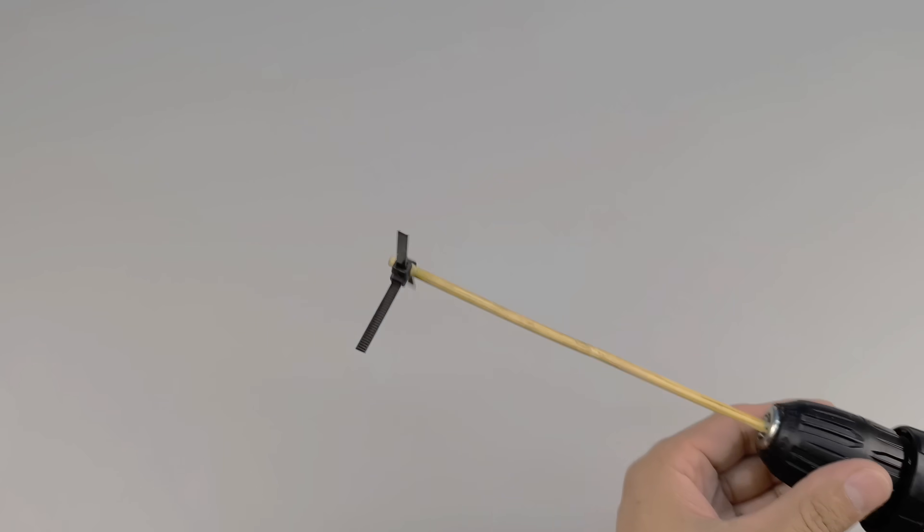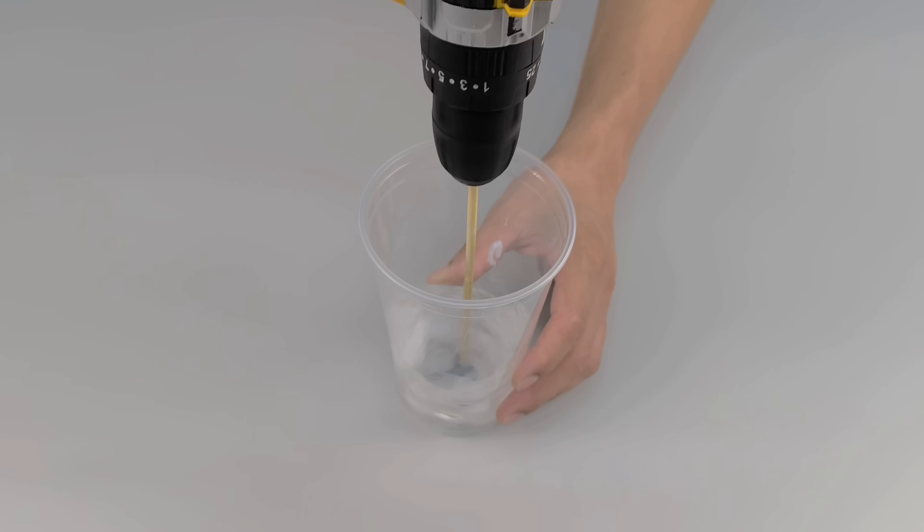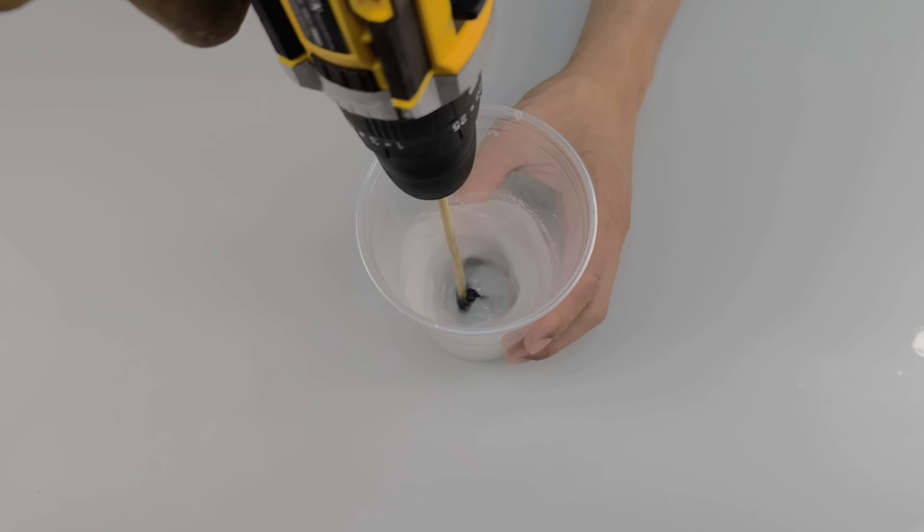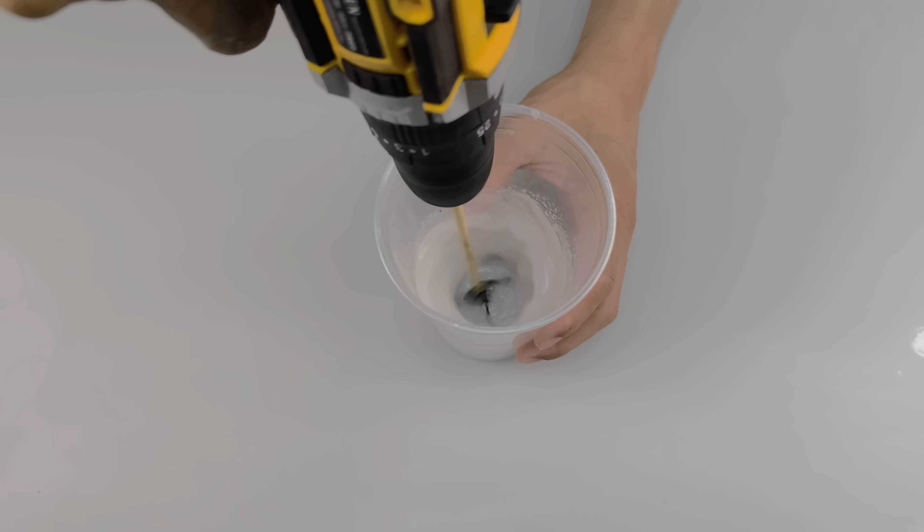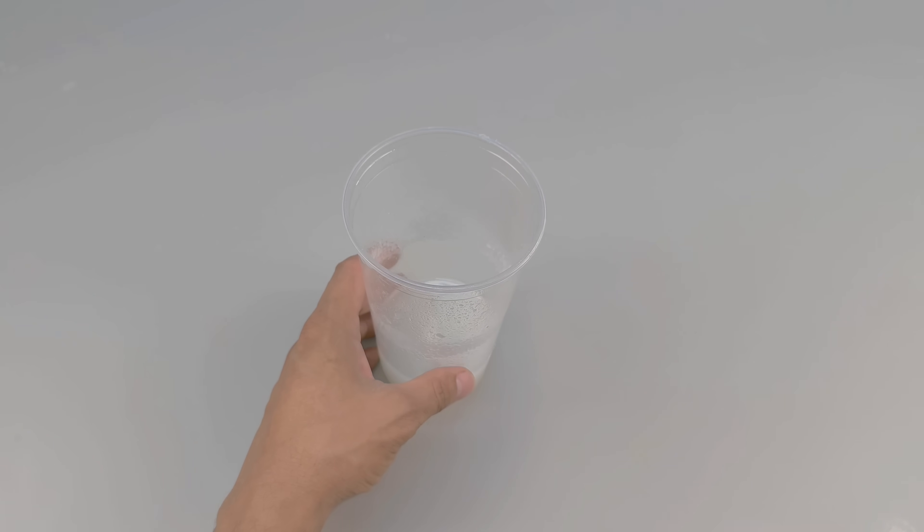With the whisk ready, place it inside the container. Now, simply operate the tool carefully, keeping the speed low at first. You'll notice that as the whisk rotates, the silicone begins to dissolve and transform into a more homogeneous gel. This process may take a few minutes, but it's essential to ensure the quality of the mixture.